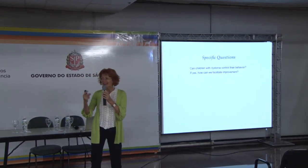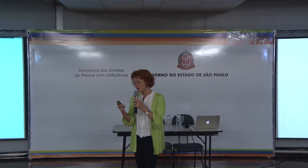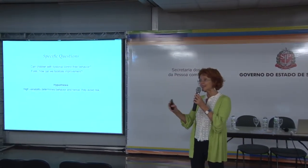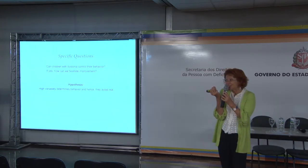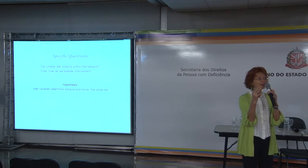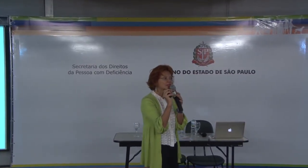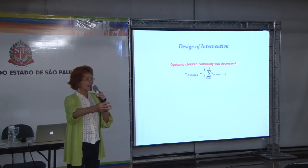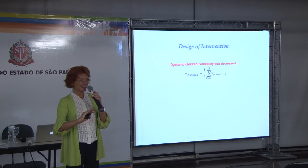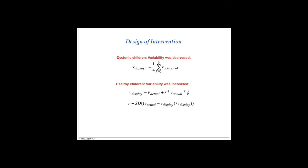Our specific question was: these children are seemingly completely out of control — do they have some control of their behavior, and can we facilitate it? Our hypothesis was that due to their seemingly uncontrolled, highly variable behavior, we cannot see that there is a smidgen of control behind it. So if we can reduce their variability, maybe there is some control we can carve out. In this very simple task, we reduced their variability — instead of showing them their veridical throw, we reduced the variability.